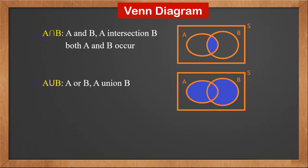The U symbol between A and B means A or B, or A union B. It is the area of both A and B, which means either event A occurs or event B occurs.